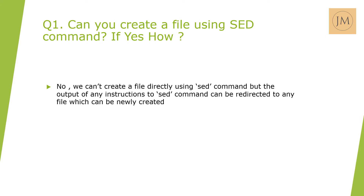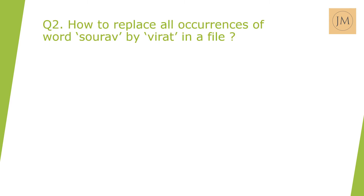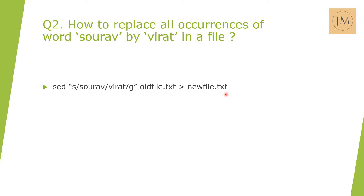Next question: How to replace all occurrences of the word 'sorrow' by 'virat' in a file? The answer is: `sed "s/sorrow/virat/g" oldfile > newfile.txt`. Here, 's' represents substitution — substituting the word 'sorrow' with 'virat'. The 'g' flag represents all occurrences in the file. Without 'g', only the first occurrence on each line would be replaced.